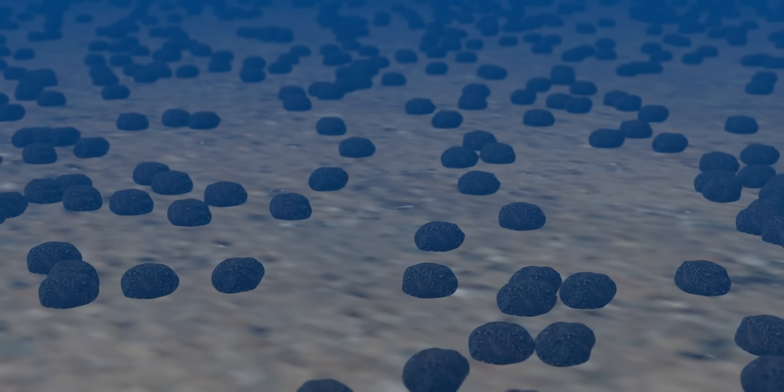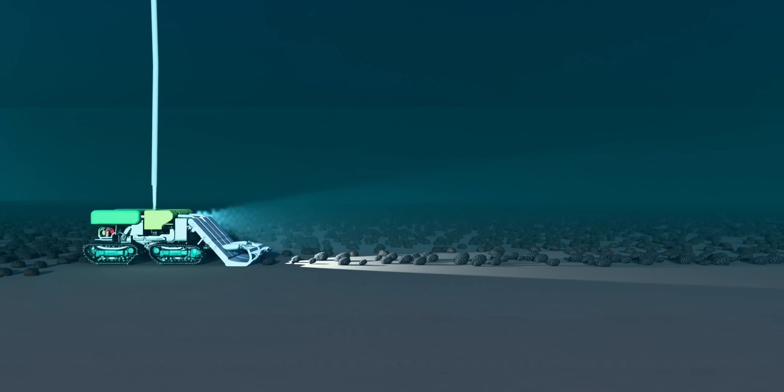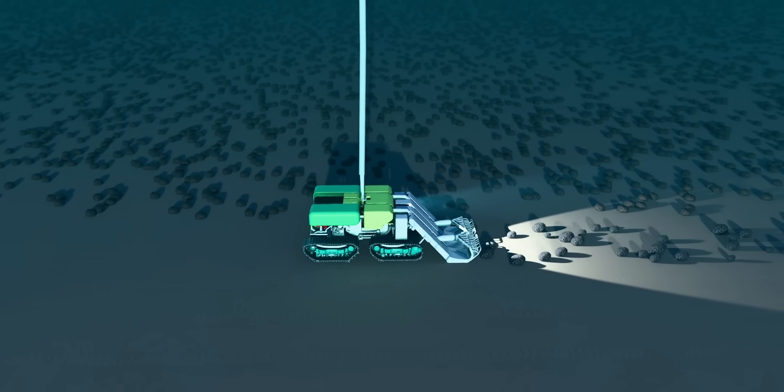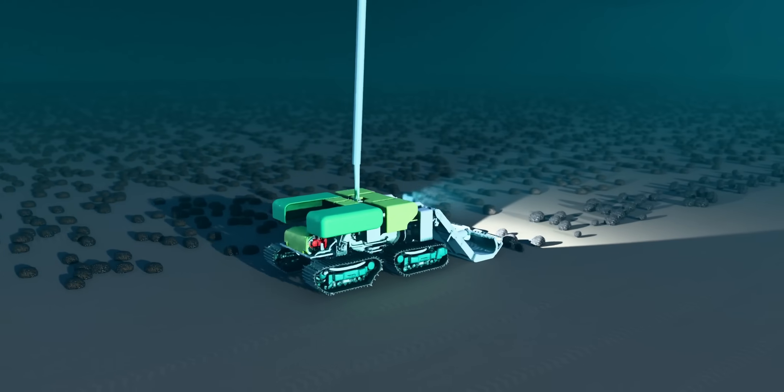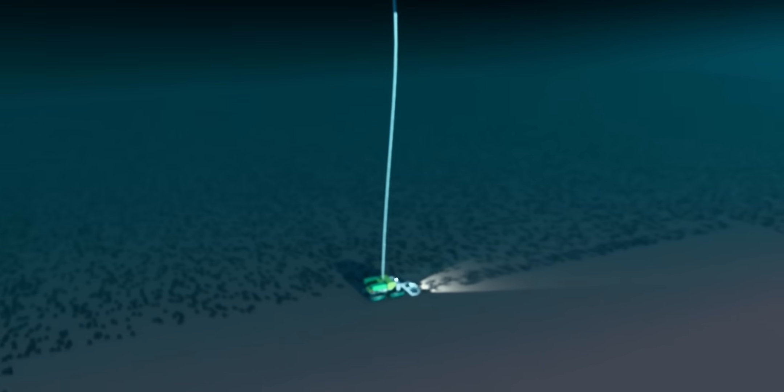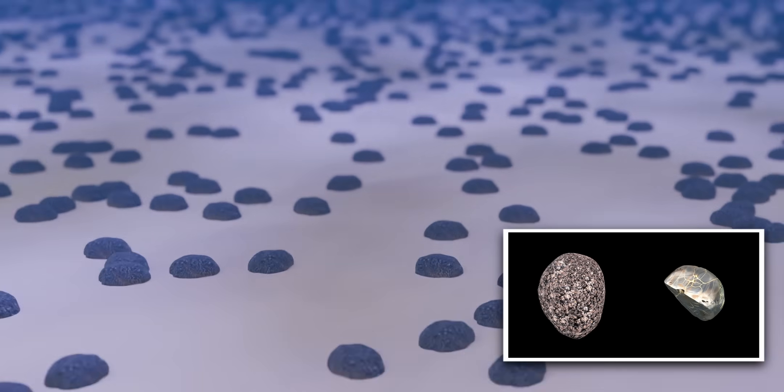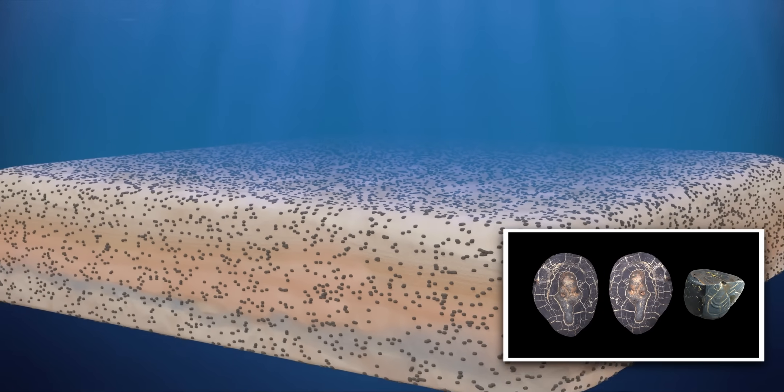For example, Minamitori Island and Clarion-Clipperton Zone. Minamitori Island is Japan's exclusive economic zone. A massive deposit of mud rich in rare earth elements has been confirmed here. About the Clarion-Clipperton Zone, this vast expanse of the Pacific Ocean floor between Hawaii and Mexico is covered in polymetallic nodules. These potato-sized rocks are rich in manganese, nickel, cobalt, and copper, and also contain rare earth elements.